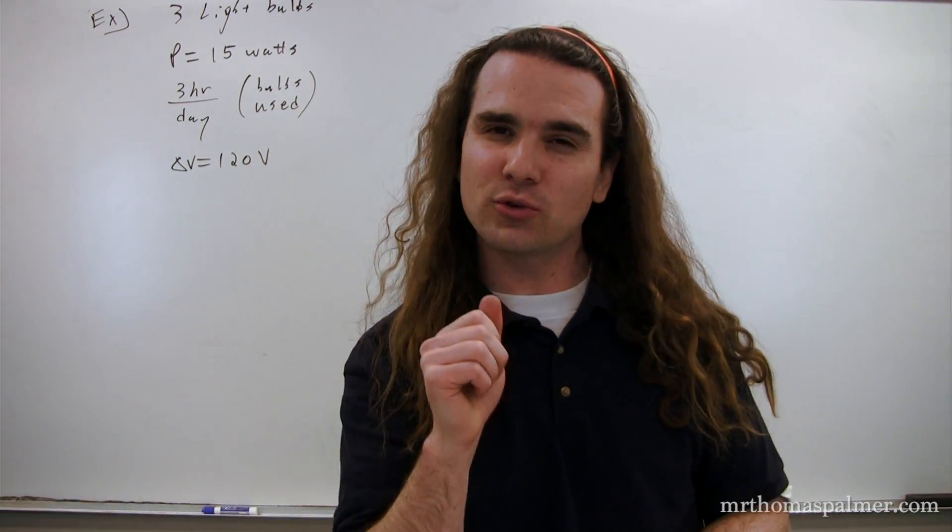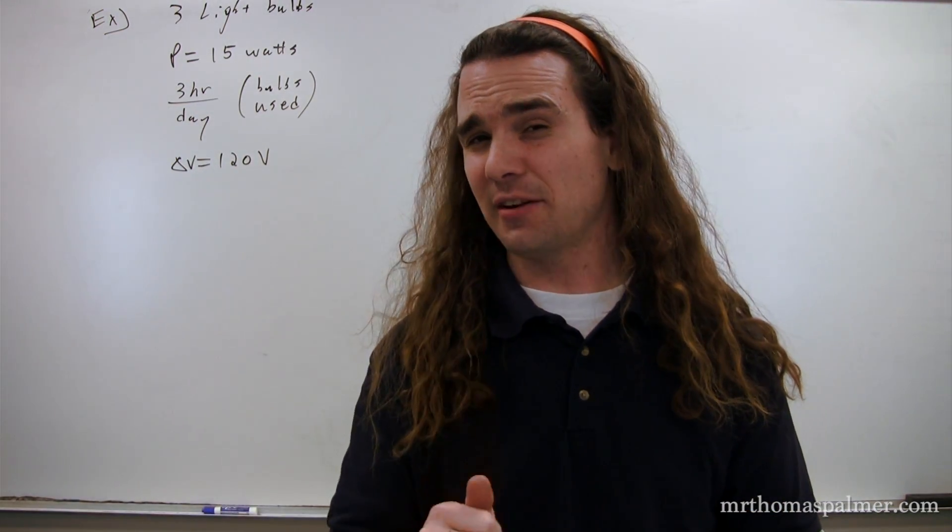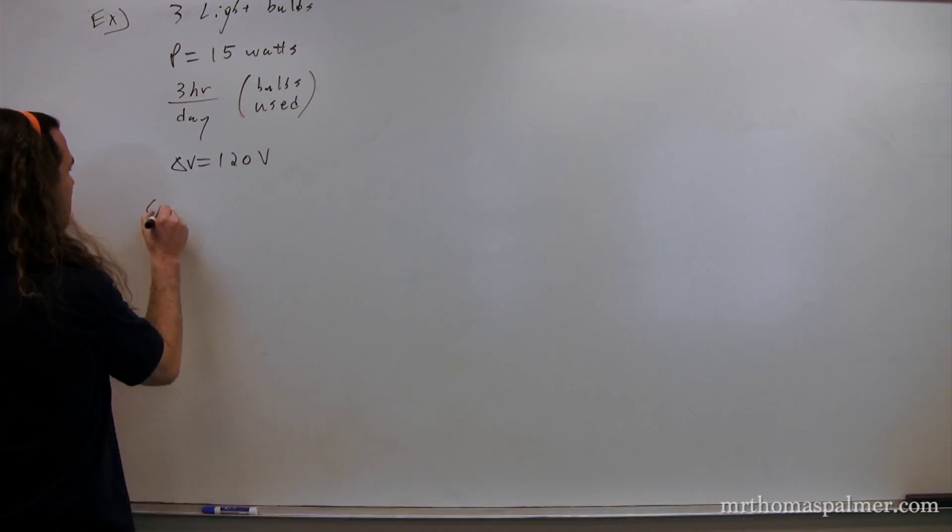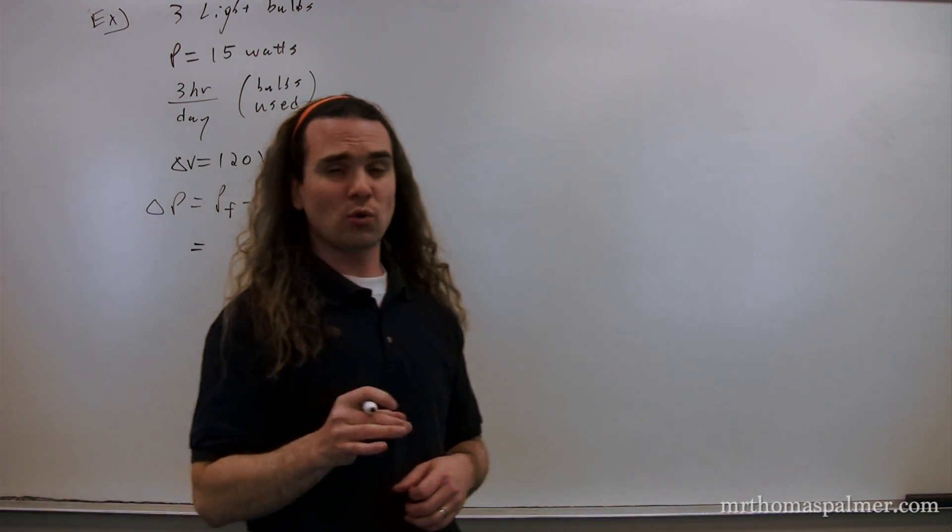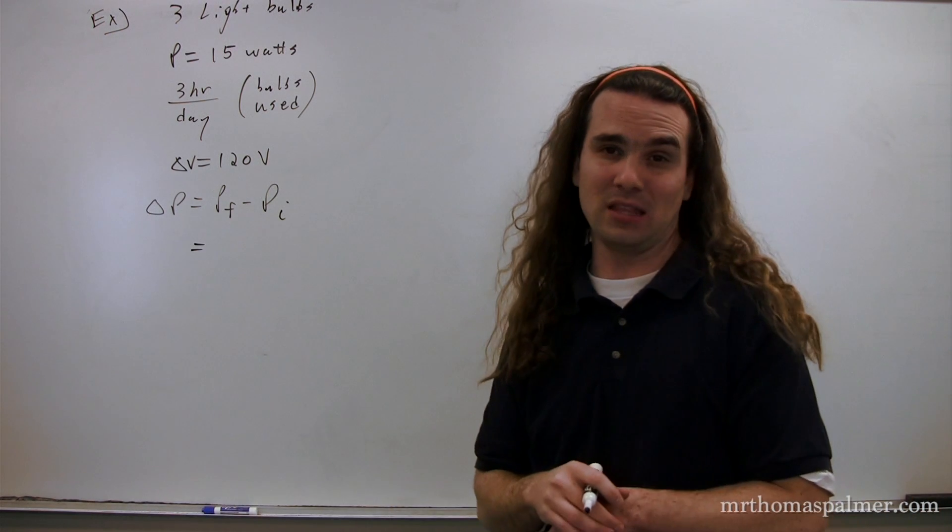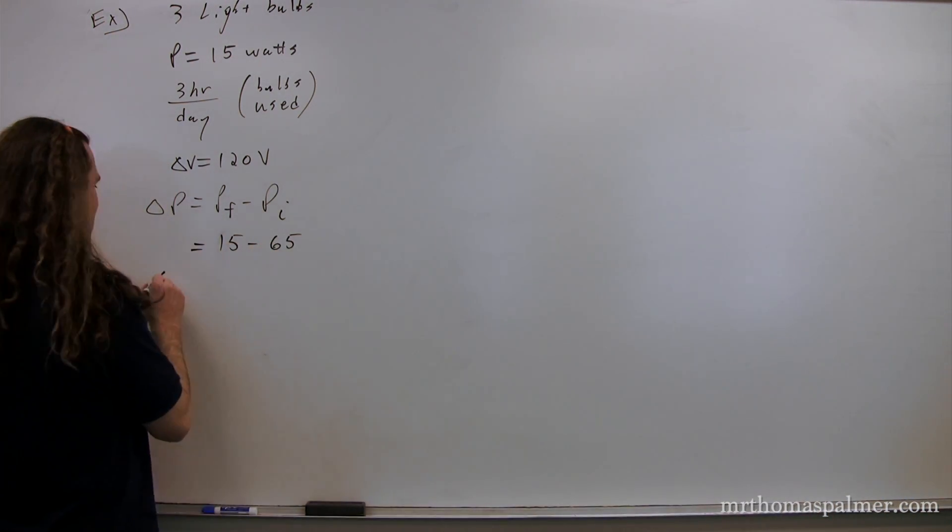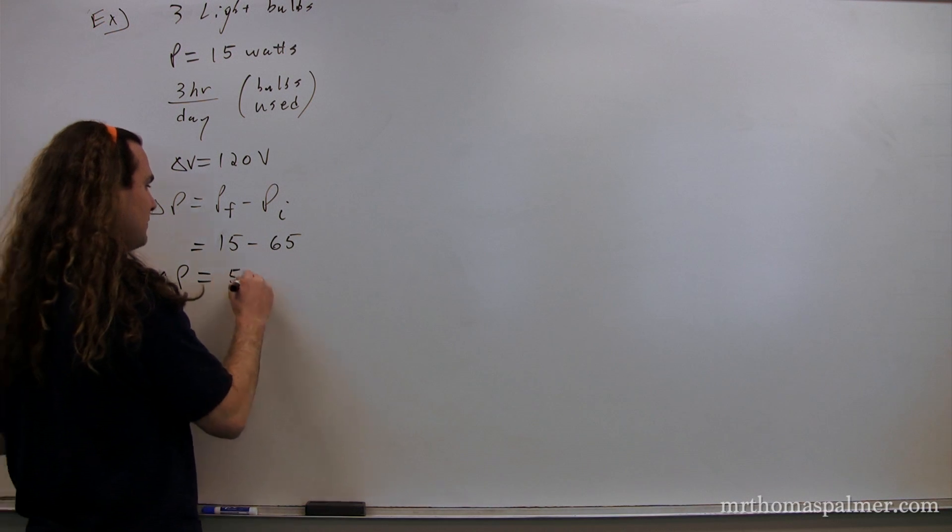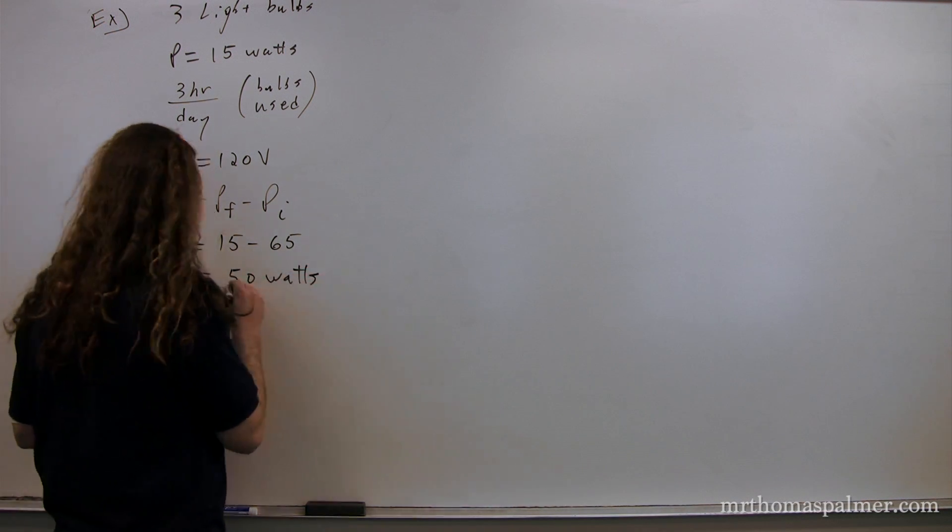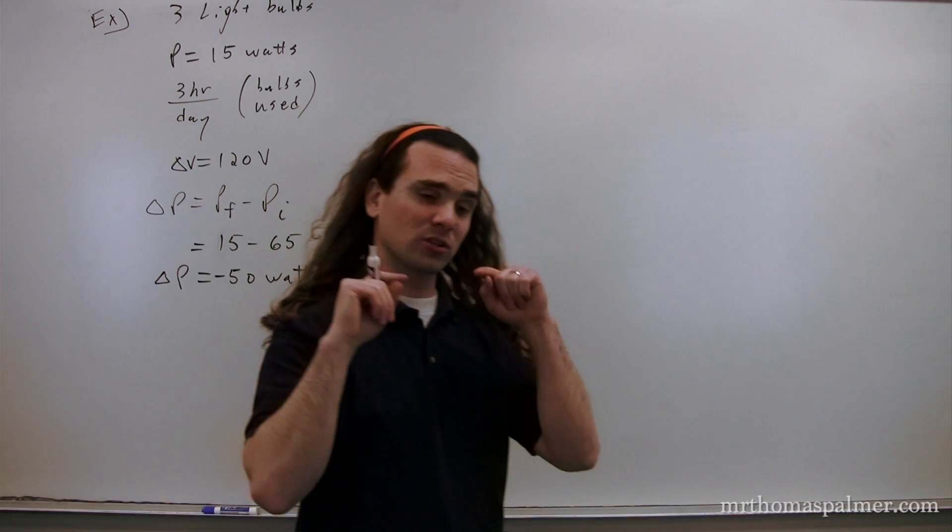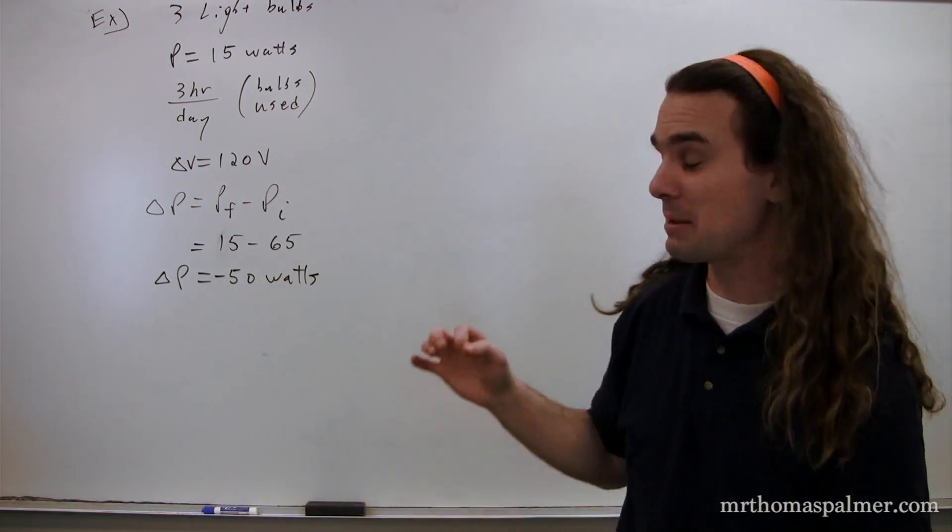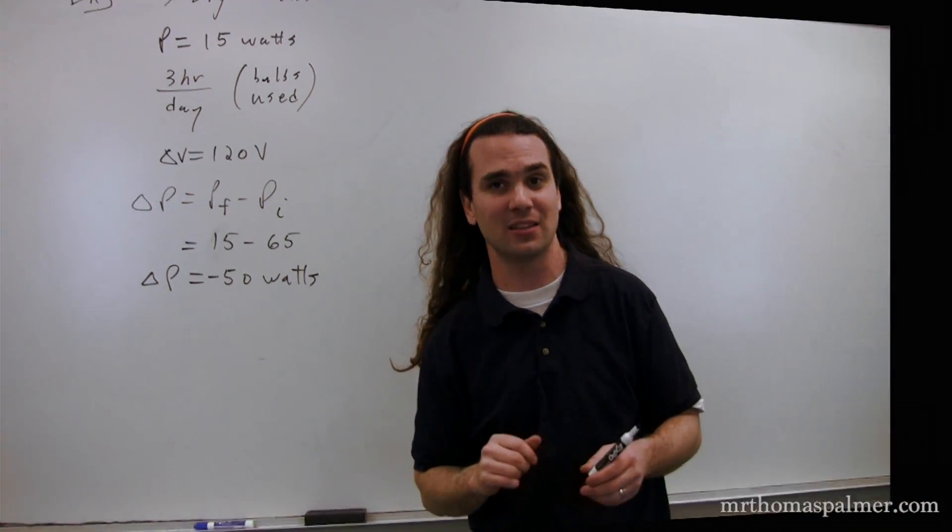Our goal is to figure out how much we've saved. So, that's actually going to be the difference in power. So, it says we're replacing a 65-watt light bulb with a 15-watt light bulb. So, the final power is 15 minus the initial power, which is 65. So, the change in power is 50 watts. And that is negative because it's money that we're saving. It's energy that we're not converting to heat, light, and sound.